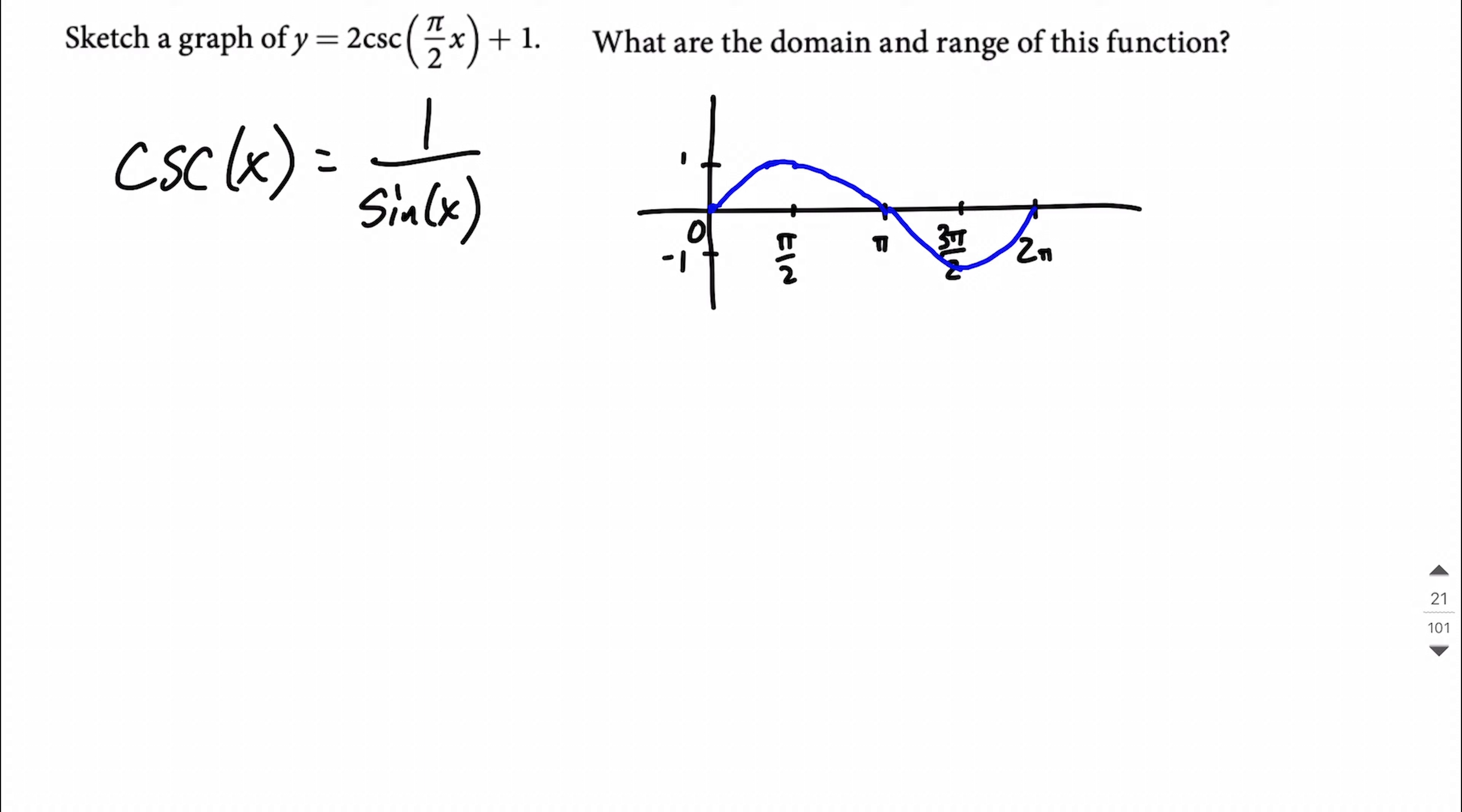Remember that sine goes between 1 and negative 1 and starts at 0 and ends at 2 pi. It's got a middle value here at pi. This is pi over 2, and this is 3 pi over 2. So just kind of sketching it in. It starts at the origin, goes up, has a highest value here at 1. If we take that y value and flip it upside down, 1 over 1, you get the exact same thing, so that point is shared between these two graphs.